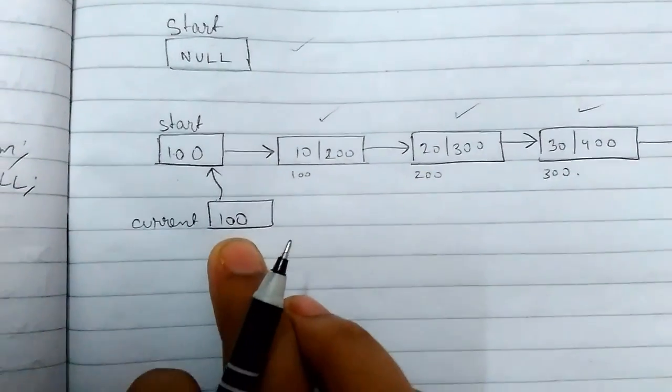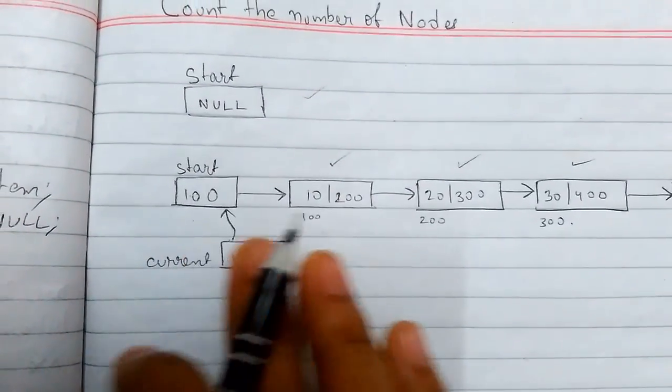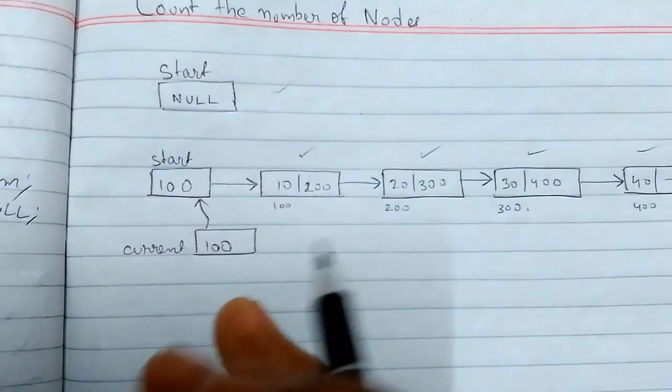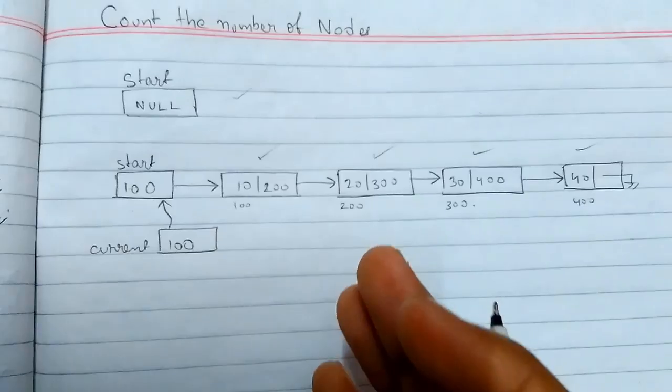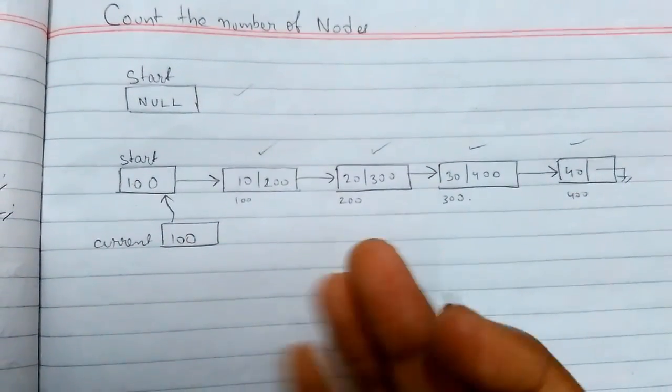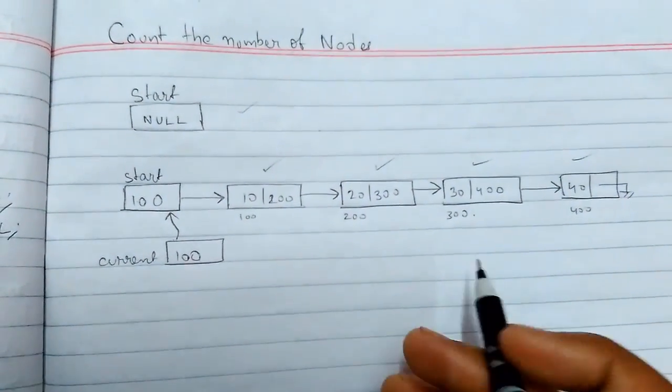For that, we need a current pointer to traverse till the end of the list. That will give us the total number of counts, so we will get the number of nodes present in the list.